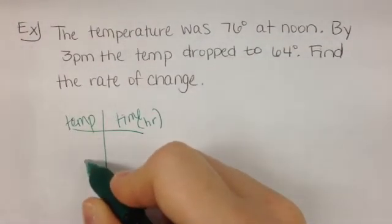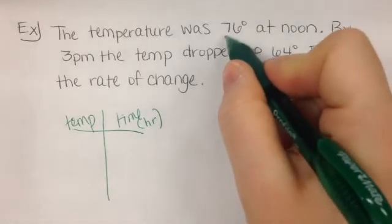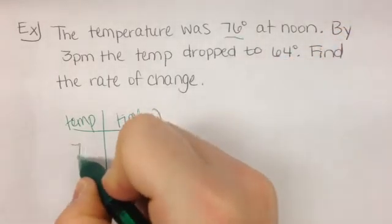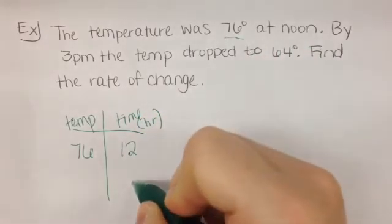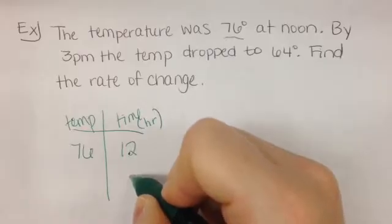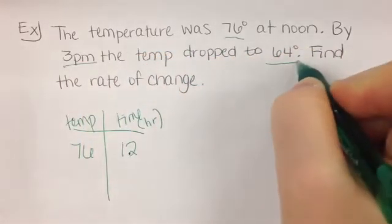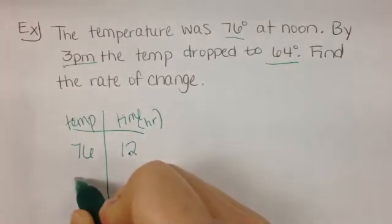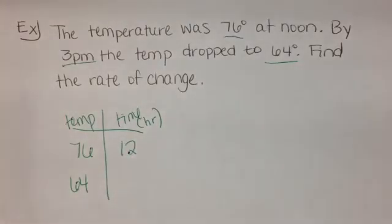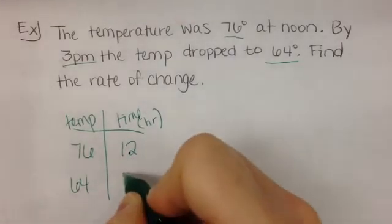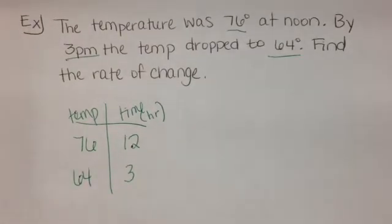Let's fill some things in. What was the temperature? 76 degrees at noon. So, at 12. By 3 p.m., the temp dropped to 64 degrees. So, fill things in. What goes here? 64 goes with 3 o'clock. Go ahead and finish this one. Find the rate of change.